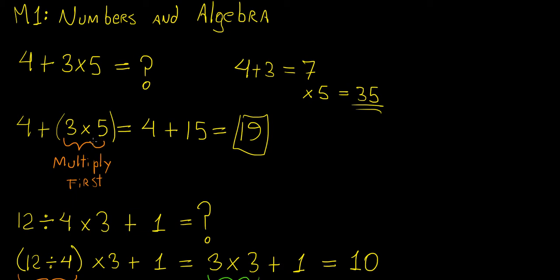So basically, multiplication comes first, and then we're going to have 4 plus 15, and that's going to give us 19.